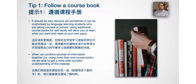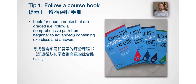The first tip: follow a course book. It shouldn't be very obvious, yet sometimes it can be overlooked by language learning students who are taking courses at school. Using additional course books for self-study will allow you to learn what you want and need at your own pace. When we combine sources of information — using more than one course book — we are able to get a more well-rounded understanding of the material. Look for course books that are graded, following a comprehensive path from beginner to advanced, containing exercises and answers.